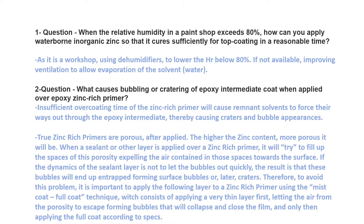The answer for this question is: we can use dehumidifiers to reduce the humidity and lower the relative humidity to less than 80%. If dehumidifiers are not available in the paint shop, then improving ventilation — providing some extra ventilation — will allow evaporation of the solvent and water. We can use a ventilation system to reduce humidity and maintain the curing conditions for the top coat.